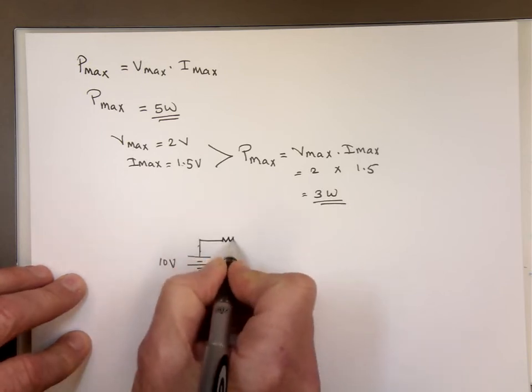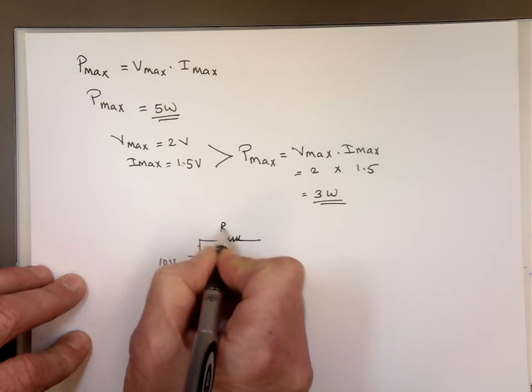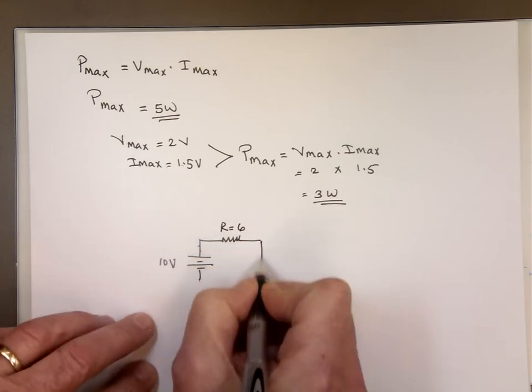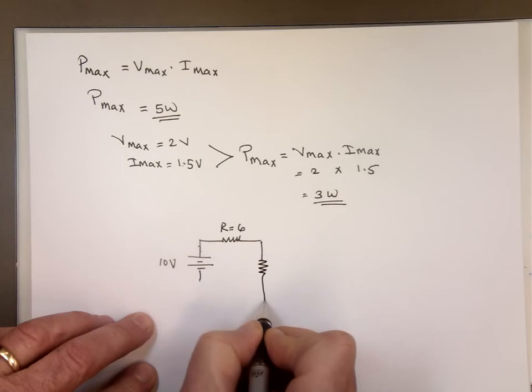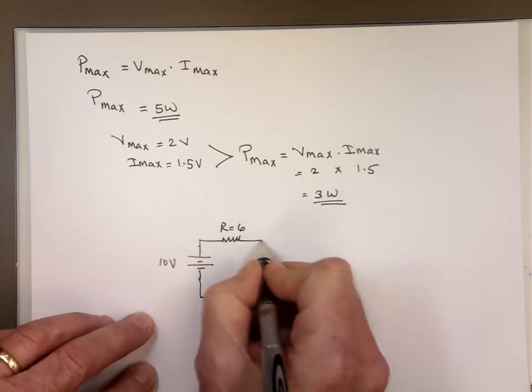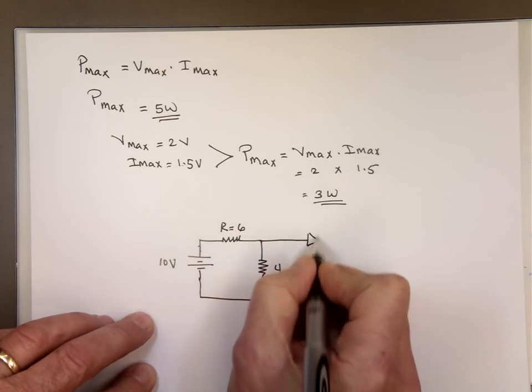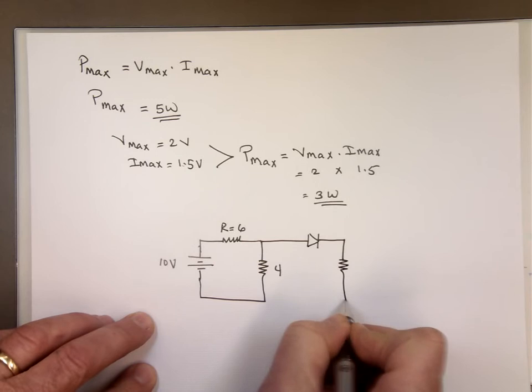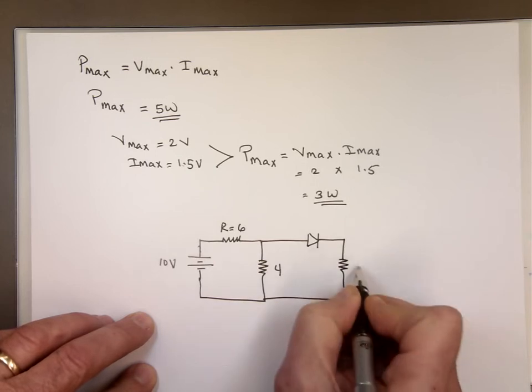Shannon, give me a number for this resistor. 6. 6. And give me another number for this resistor. 4. 4. And now we have a diode here. And Shannon, one more value here. 12. 12 ohms.